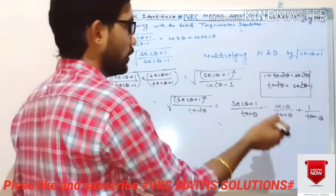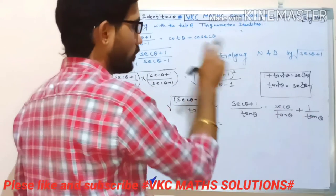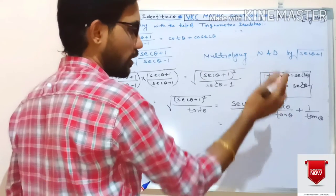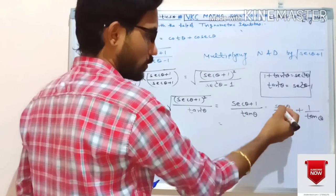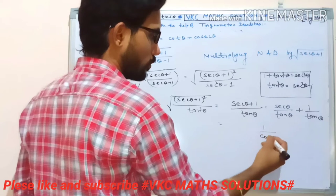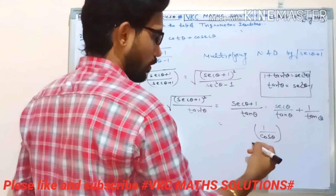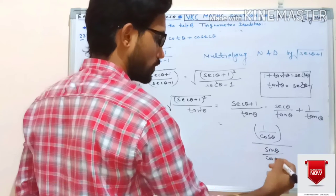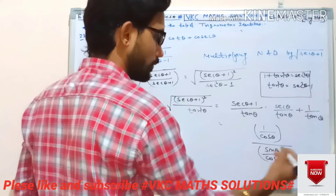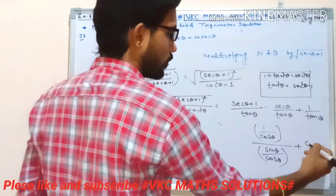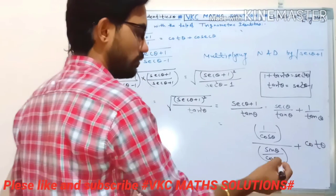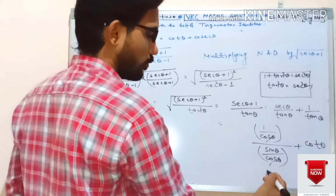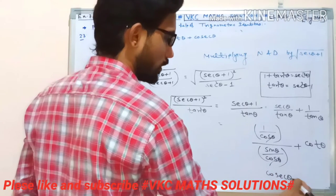Now sec/tan: we convert to sin and cos. secθ = 1/cosθ and tanθ = sinθ/cosθ. So secθ/tanθ = (1/cosθ) ÷ (sinθ/cosθ) = 1/sinθ = cosecθ. And 1/tanθ = cotθ. So the answer is cotθ + cosecθ. Hence Exercise 23 is proved.